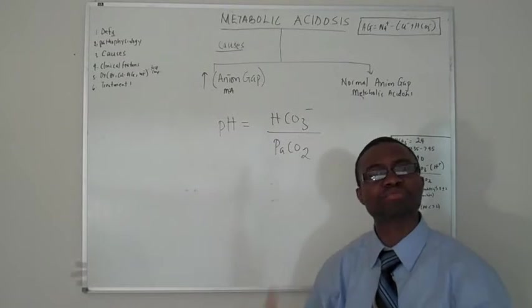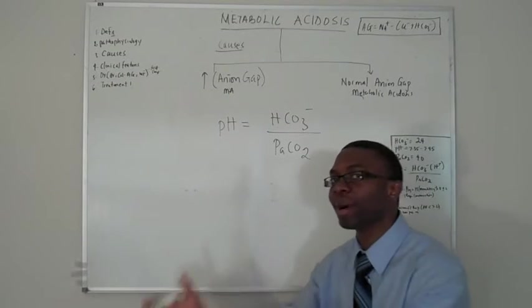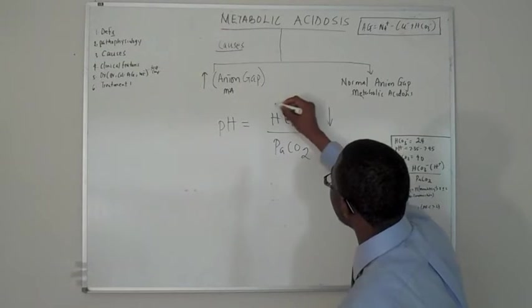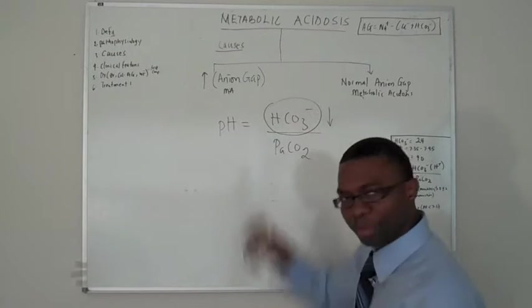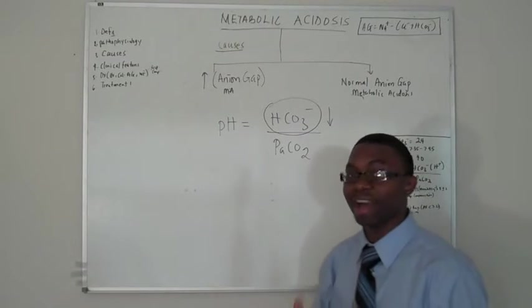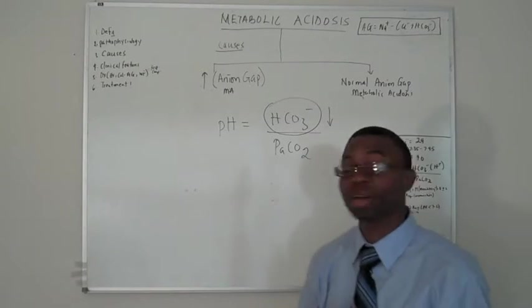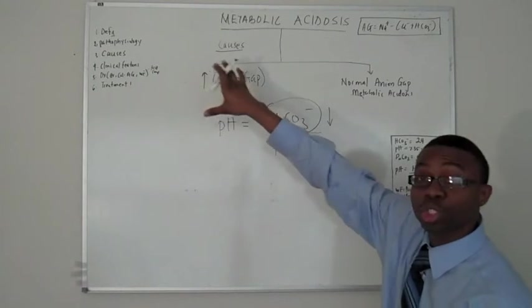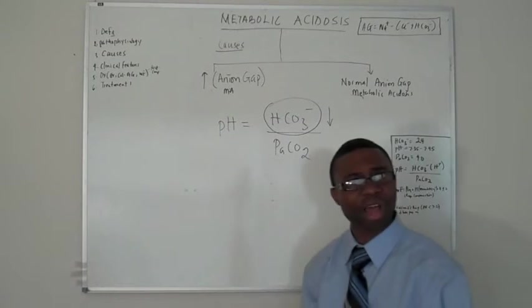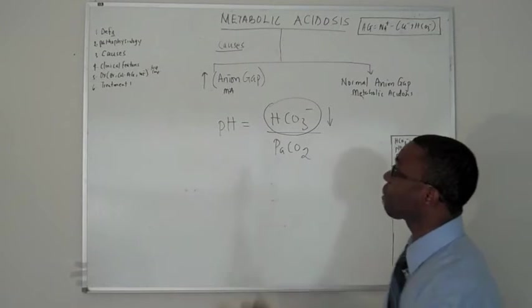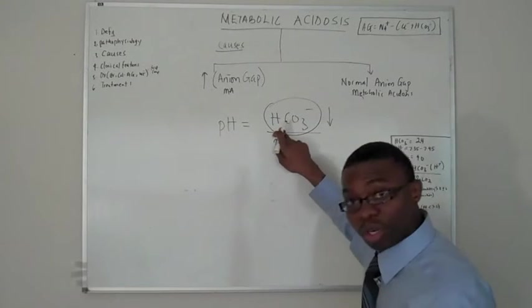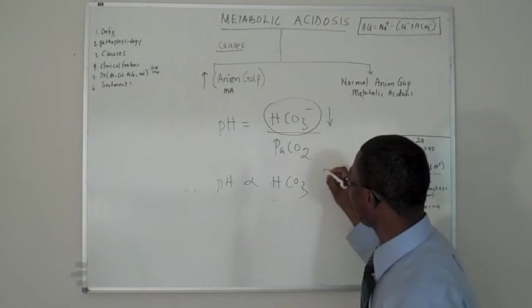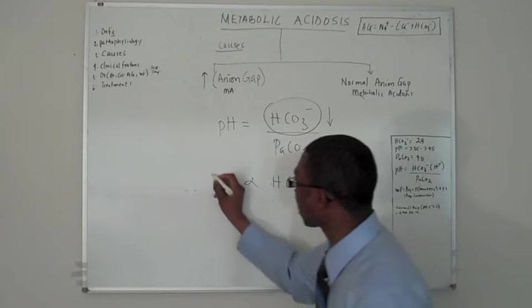We said the primary problem in metabolic acidosis is a low bicarb. That is where your problem is. The biggest problem in metabolic acidosis is this, low bicarb. Remember, I showed you the formula at the beginning, and I even showed you the pathway of how I arrived at this. It makes sense biochemically. Because pH is directly proportional to bicarb, right?